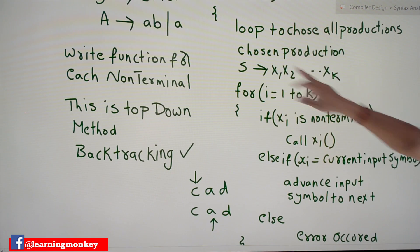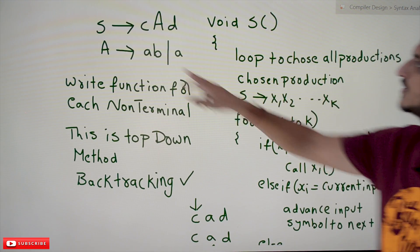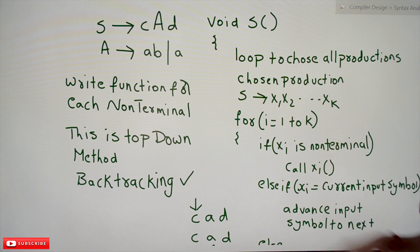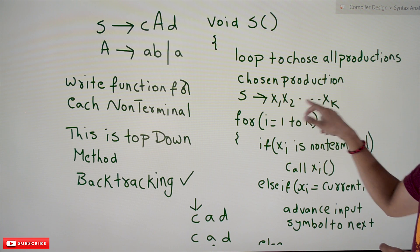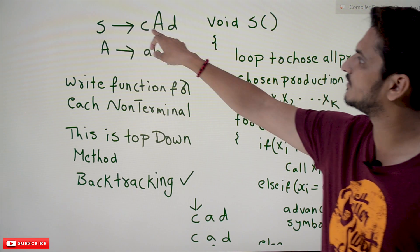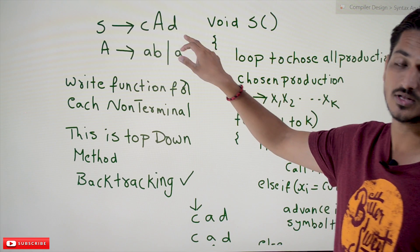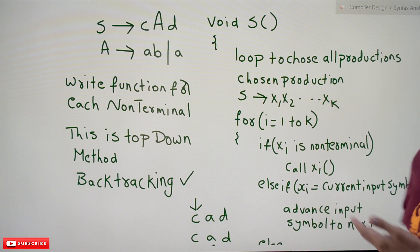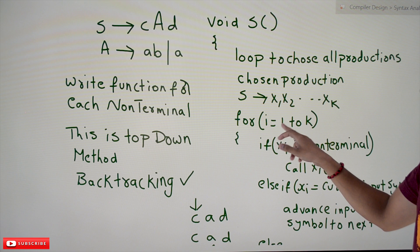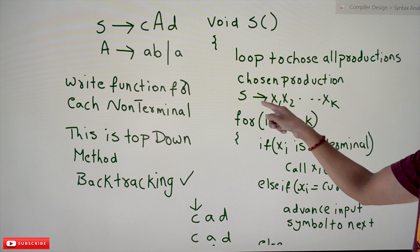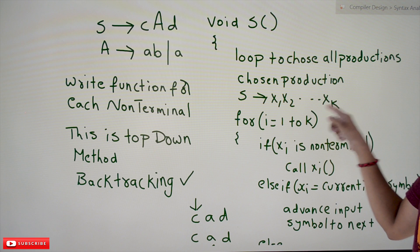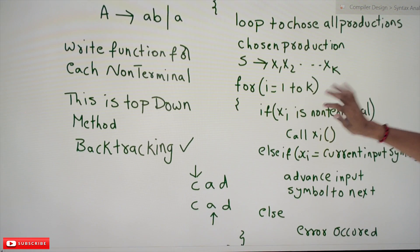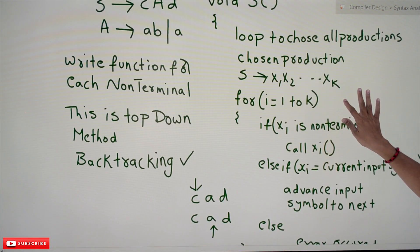Assume the first production has been chosen: S tends to c A d. This production is of the form S tends to X1 X2 ... Xk, where X1 is the first symbol, X2 the second, and so on. We loop from i equals 1 to k — one iteration per symbol in the production — taking each symbol and applying the matching logic.